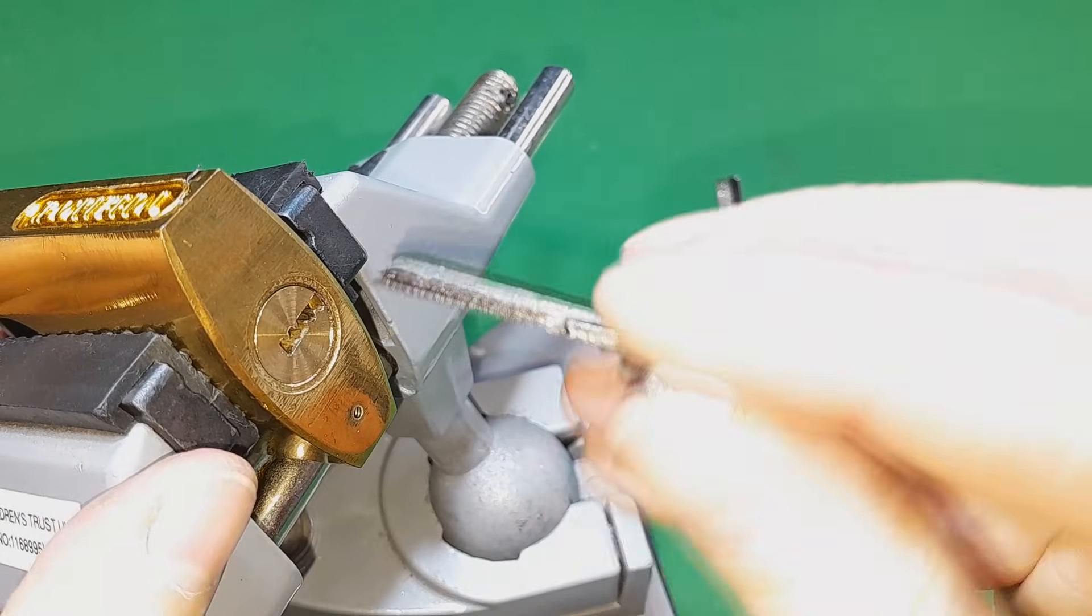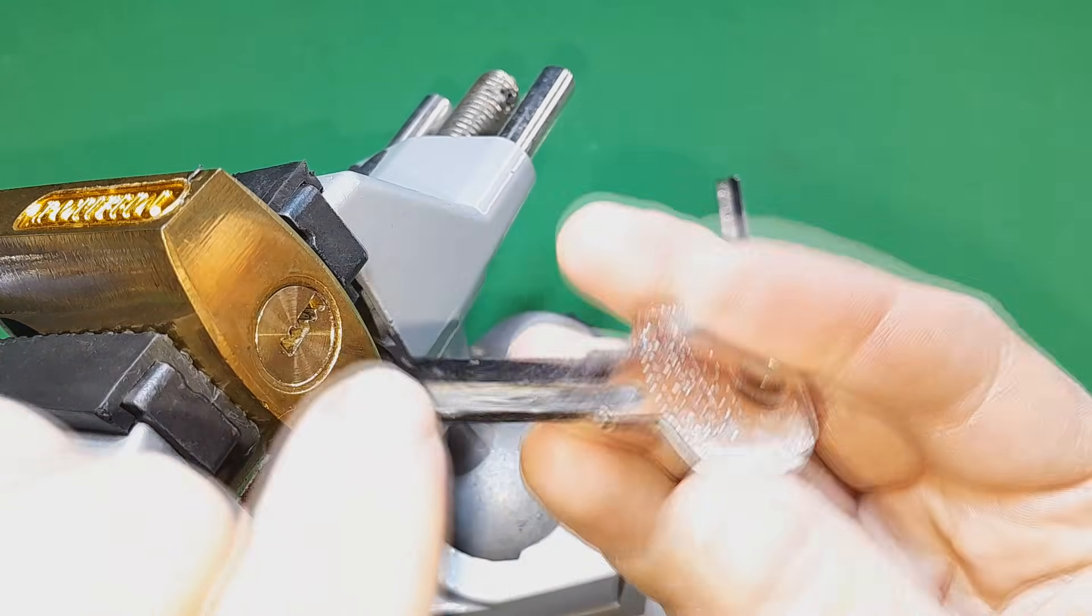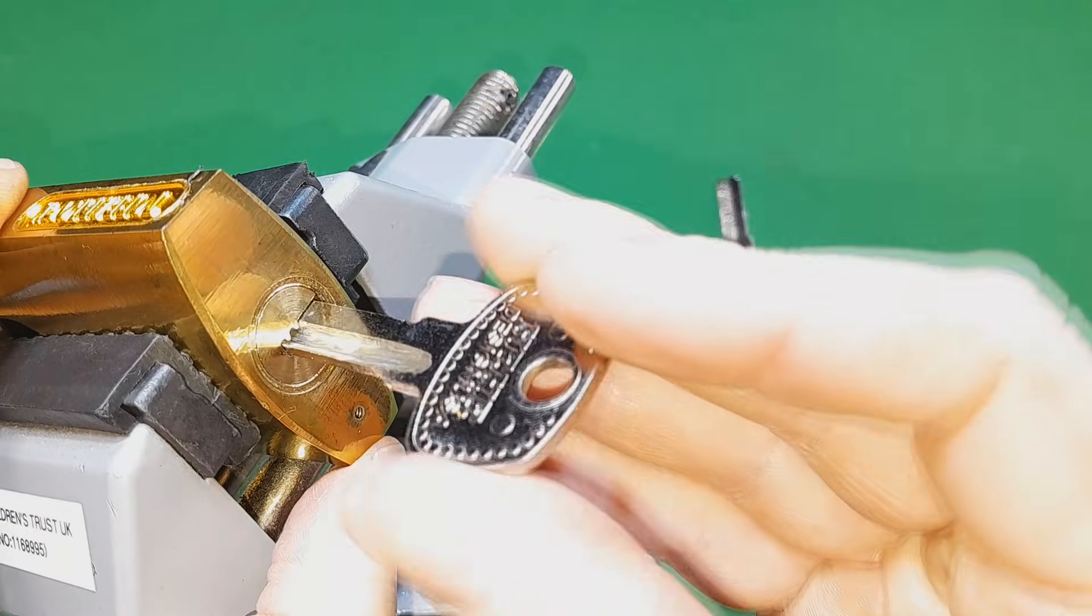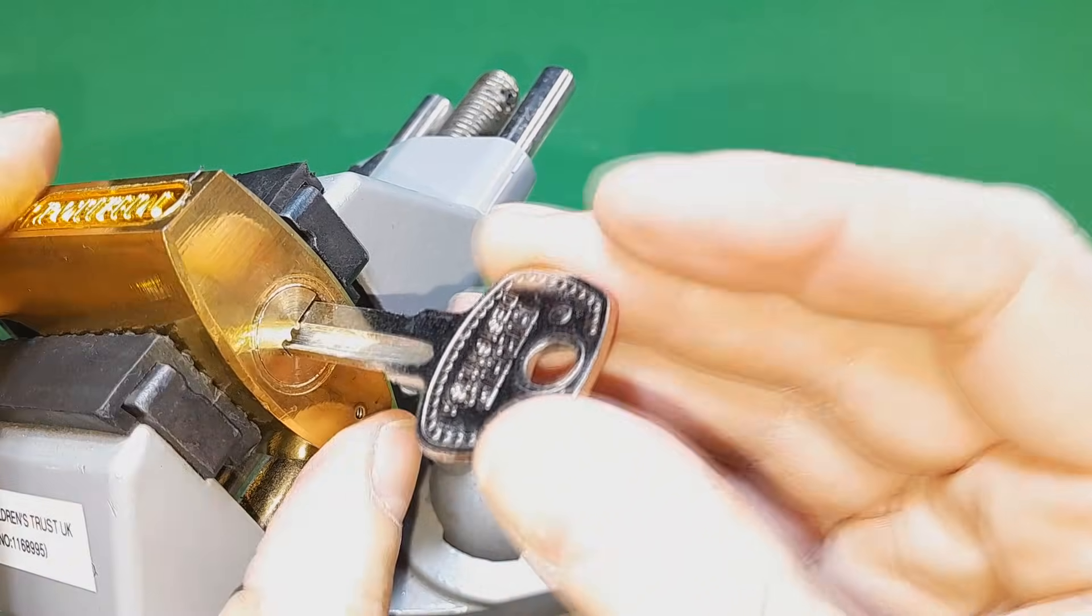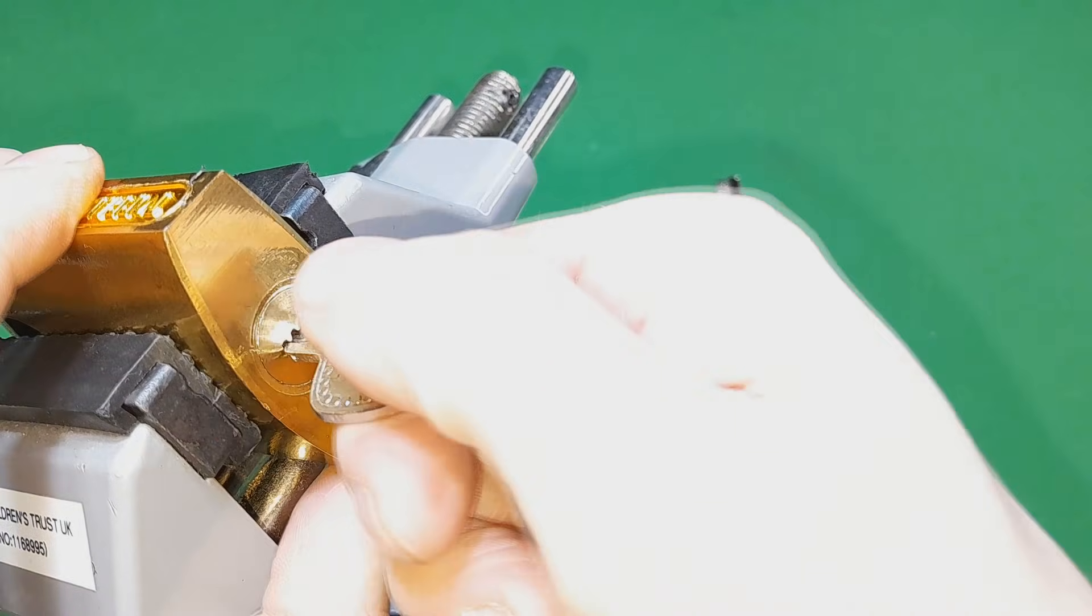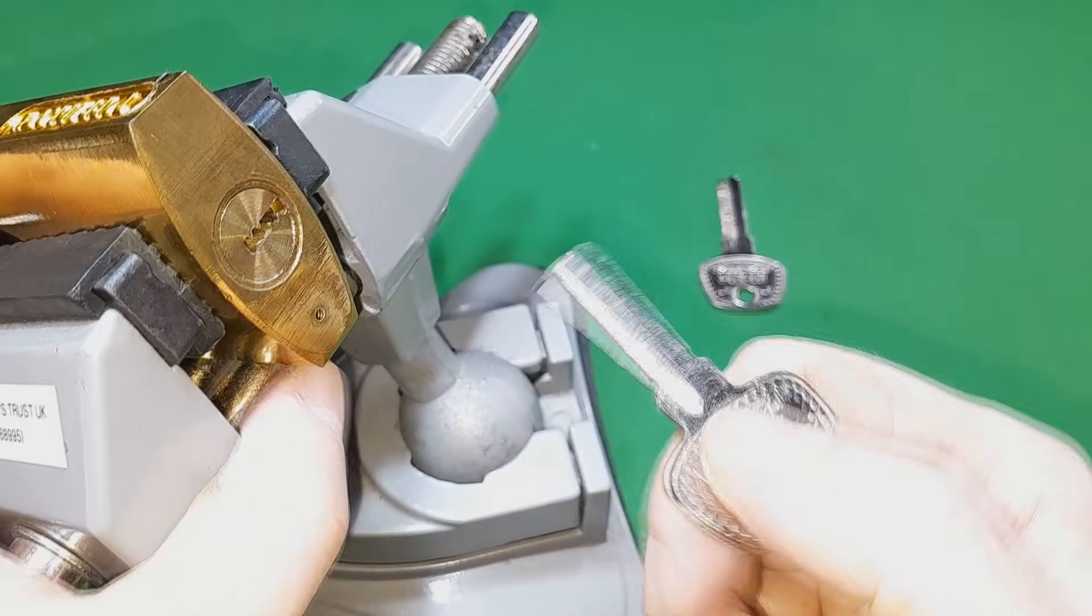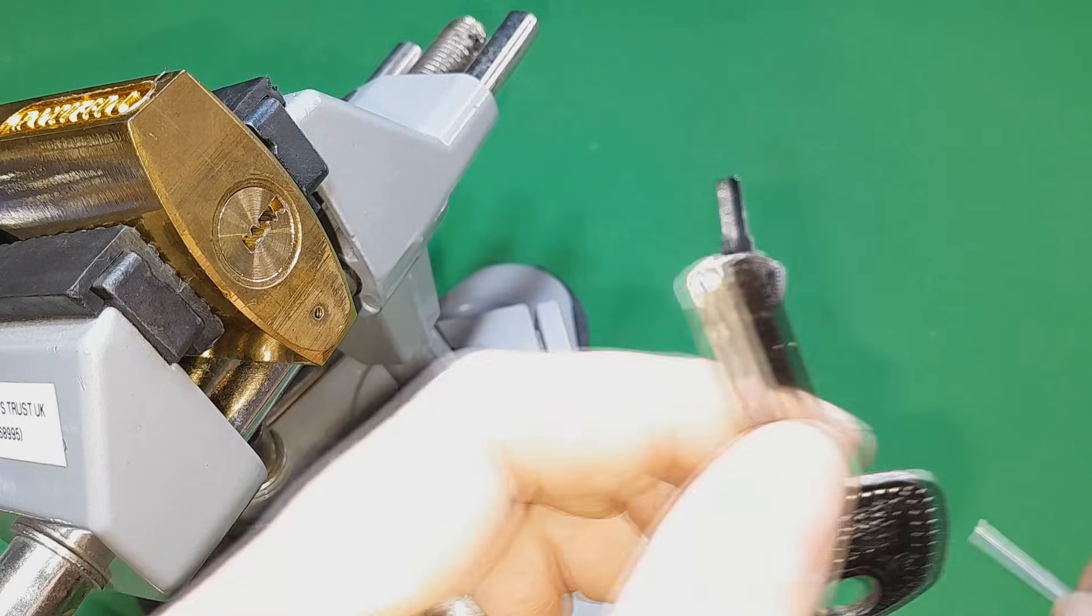So we take the key out, turn it around so the bit without the bidding is on where we ground it off. Put it in and it's not going to open it. So what we're going to do now is we're going to take a foil.